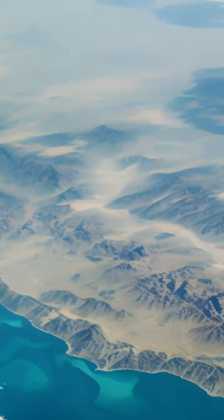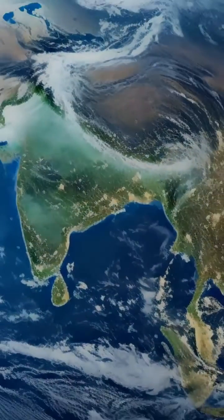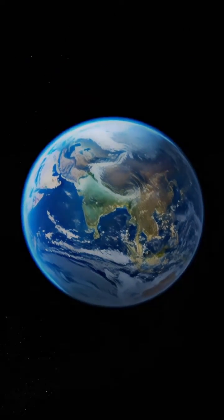10 to the 6th. A 1 with 6 zeros, a million meters. The Earth appears as a solid sphere.